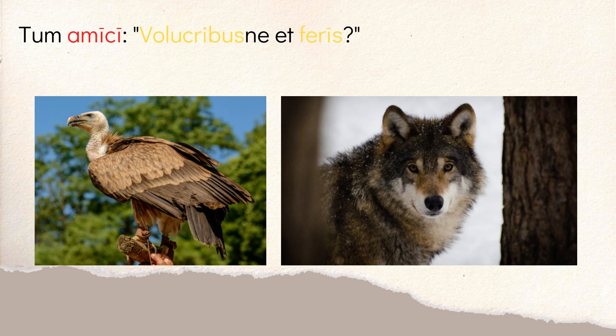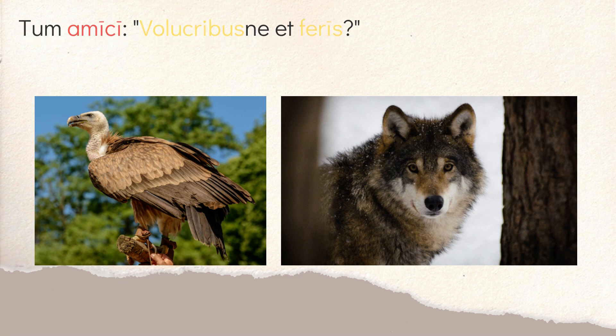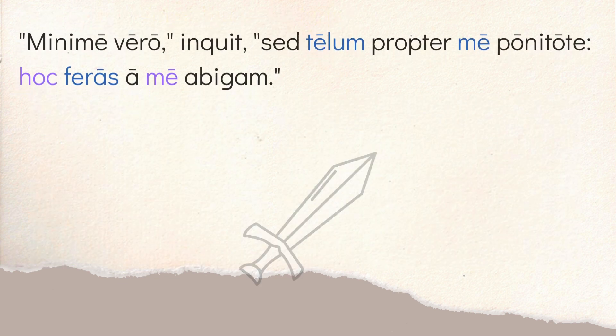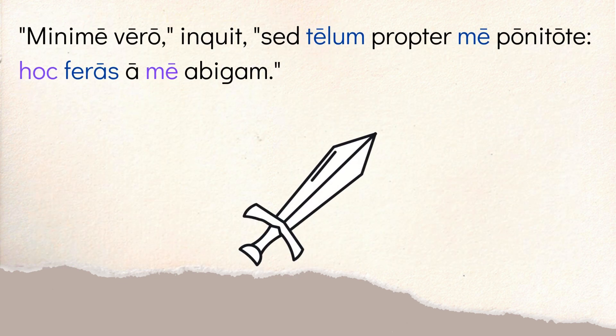Then his friends — 'tum amici' — respond. 'Volucribus ne et feris?' — to the birds and the wild beasts? 'Feris' meaning the feral animals. They're essentially asking: aren't you going to get eaten? That's the implied question his friends are raising.